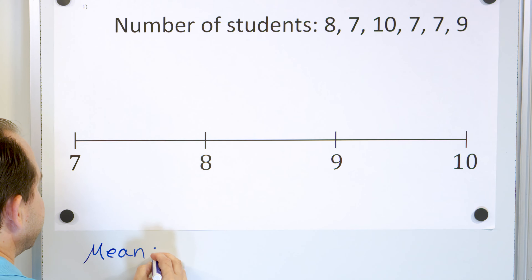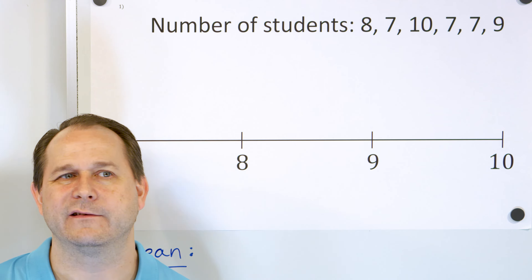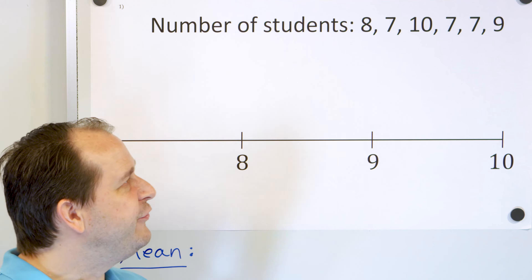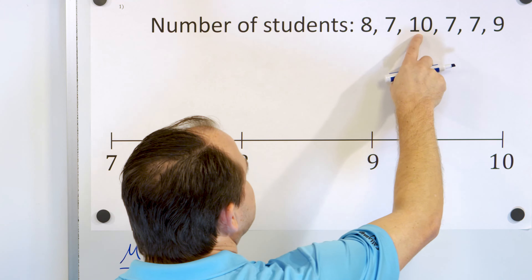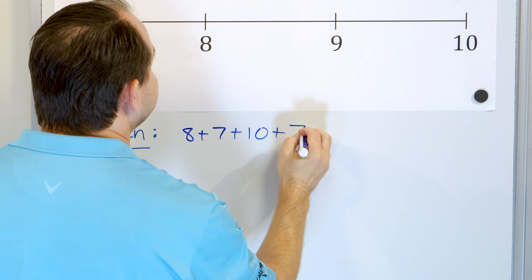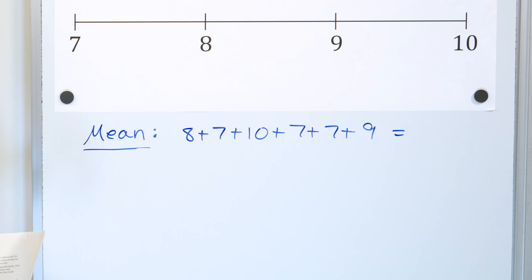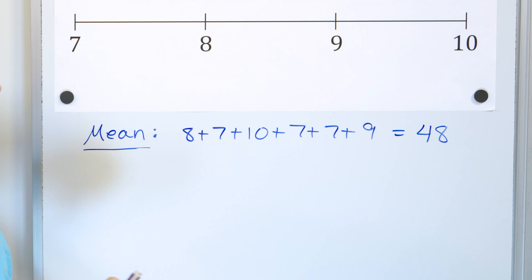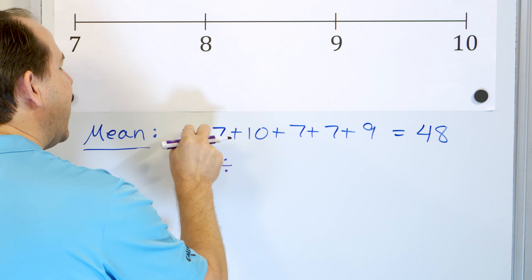I know you all understand at least an idea of what the mean is, because it's exactly the same thing as the average. To find the mean, all you do is add all of the numbers together and then divide by how many you have. So in this case, it's 8 plus 7 plus 10 plus 7 plus 7 plus 9. We write that down — notice we have six numbers. If we add all this up, either in a calculator or by hand, you're going to get the number 48.